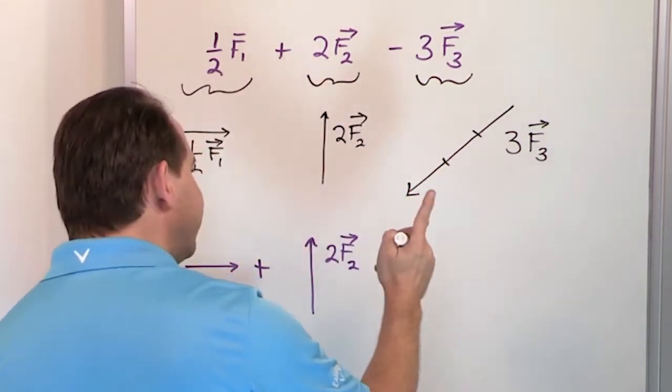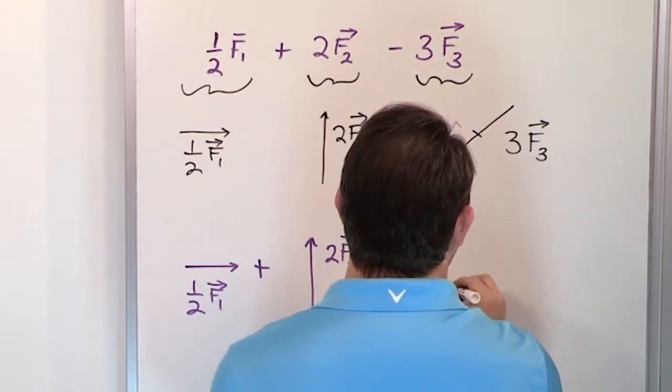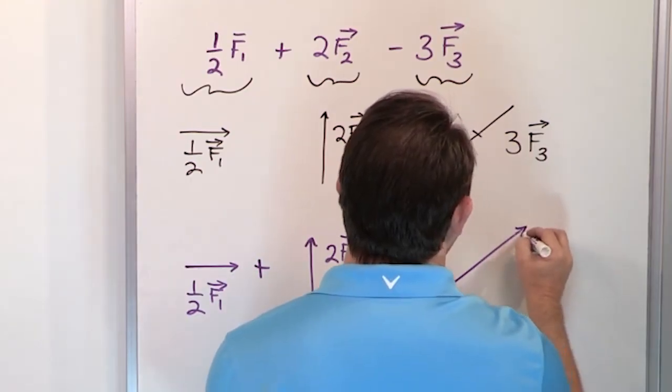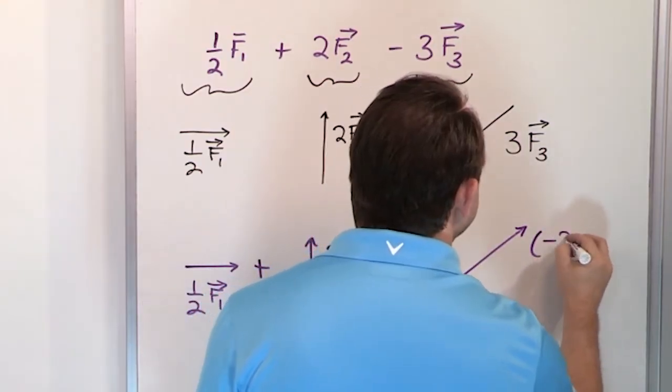So I'm going to do my best to draw this arrow, the same length as this one, but I'm going to write it as negative 3F3.